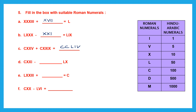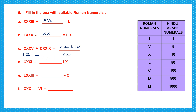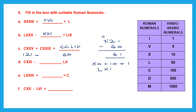Next: CXXI is 100 plus 20 plus 1 equals 121, and LX is 50 plus 10 equals 60. 121 minus 60 equals 61. We write 61 as 50 plus 10 plus 1 — L for 50, X for 10, I for 1 — giving LXI.